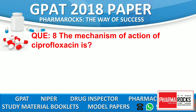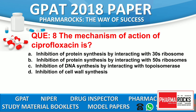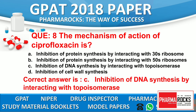Question number 8: The mechanism of action of ciprofloxacin. Option A: Inhibition of protein synthesis by interacting with 30S ribosome. Option B: Inhibition of protein synthesis by interacting with 50S ribosome. Option C: Inhibition of DNA synthesis by interacting with topoisomerase enzyme. Option D: Inhibition of cell wall synthesis. The correct answer is C — ciprofloxacin inhibits DNA synthesis by interacting with topoisomerase enzyme.